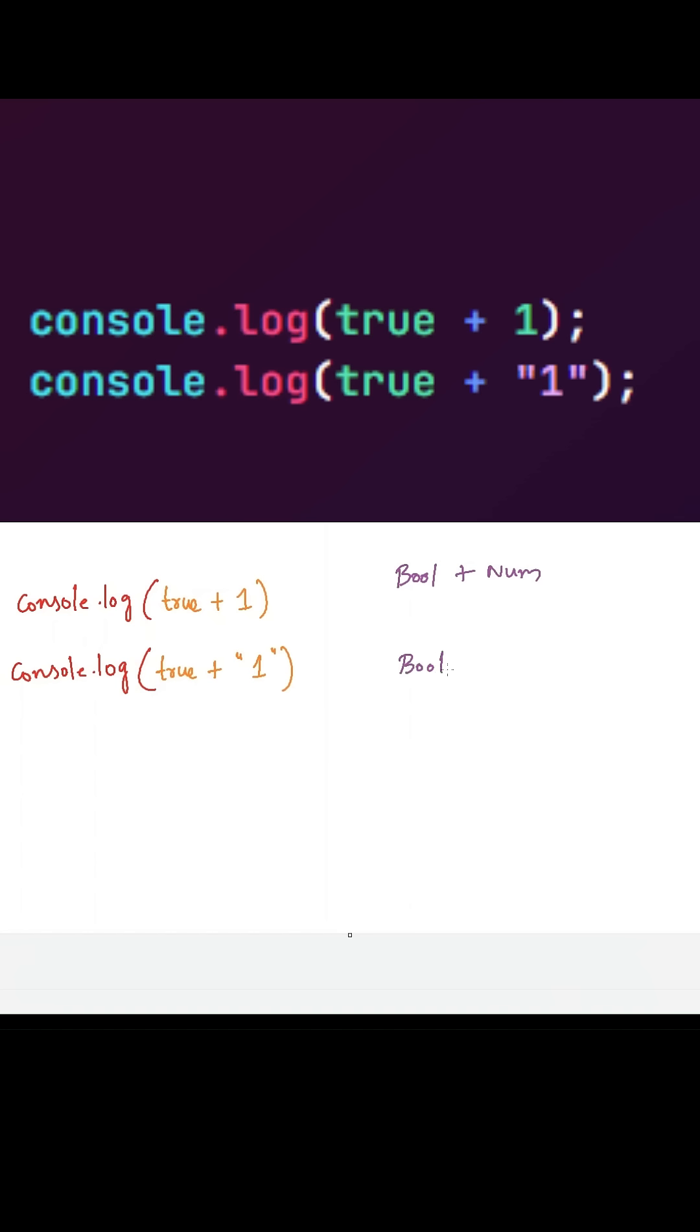the other is boolean plus string combination. Whenever we use addition operators between a boolean value and a number, JavaScript will convert this boolean value into a number. So true will be converted into one and false will be converted